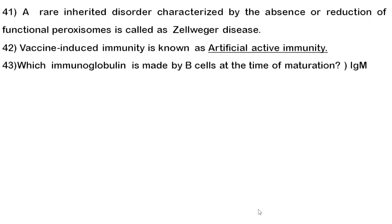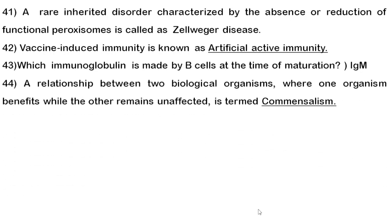Forty-third question: which immunoglobulin is made by a B cell at the time of maturation? It is IgM — IgM acts as the B cell receptor at the time of B cell maturation.